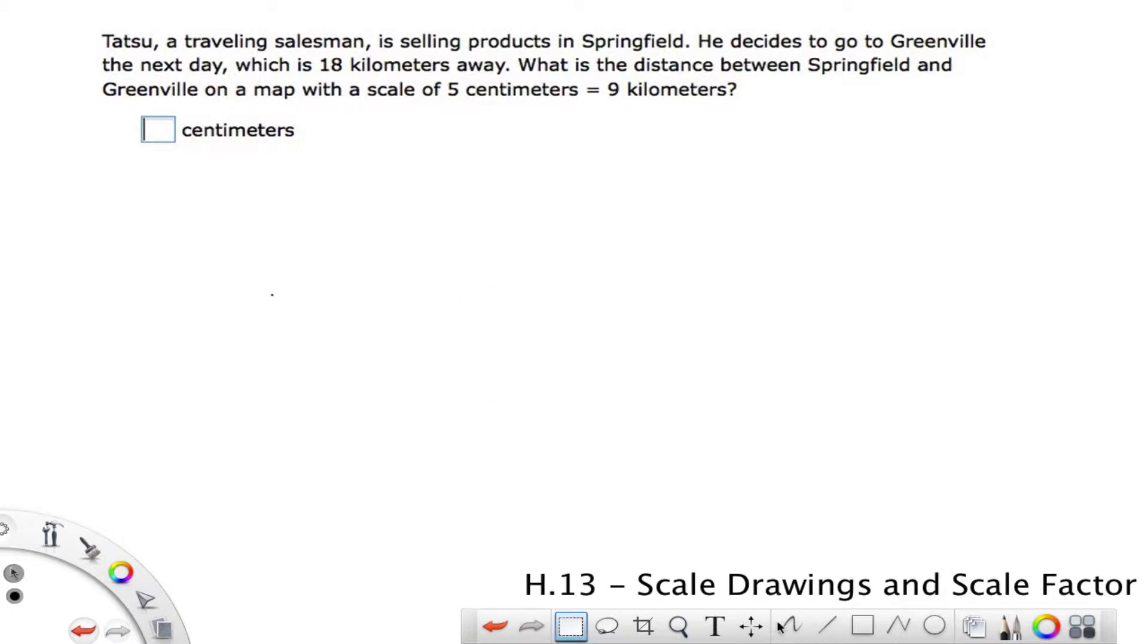This is just a proportion problem. So we're going to set up a proportion. In this case, we have 5 centimeters to 9 kilometers, so 5 to 9. And then, since this is in kilometers, 18 kilometers, that's going to go on the bottom, 18 kilometers, and this is the thing we don't know, X centimeters.